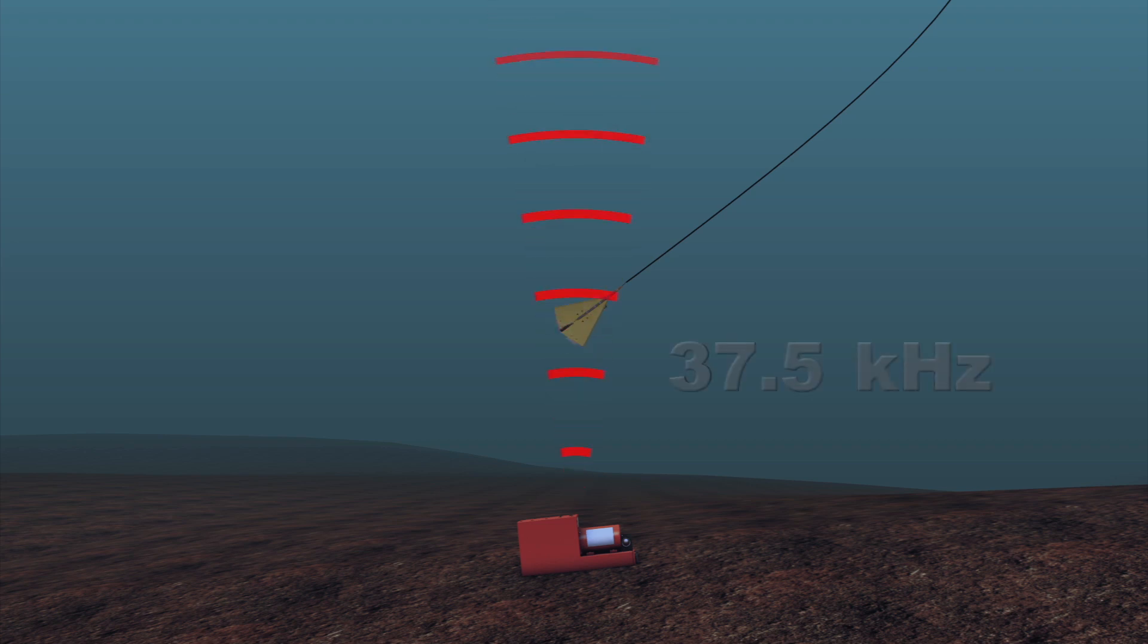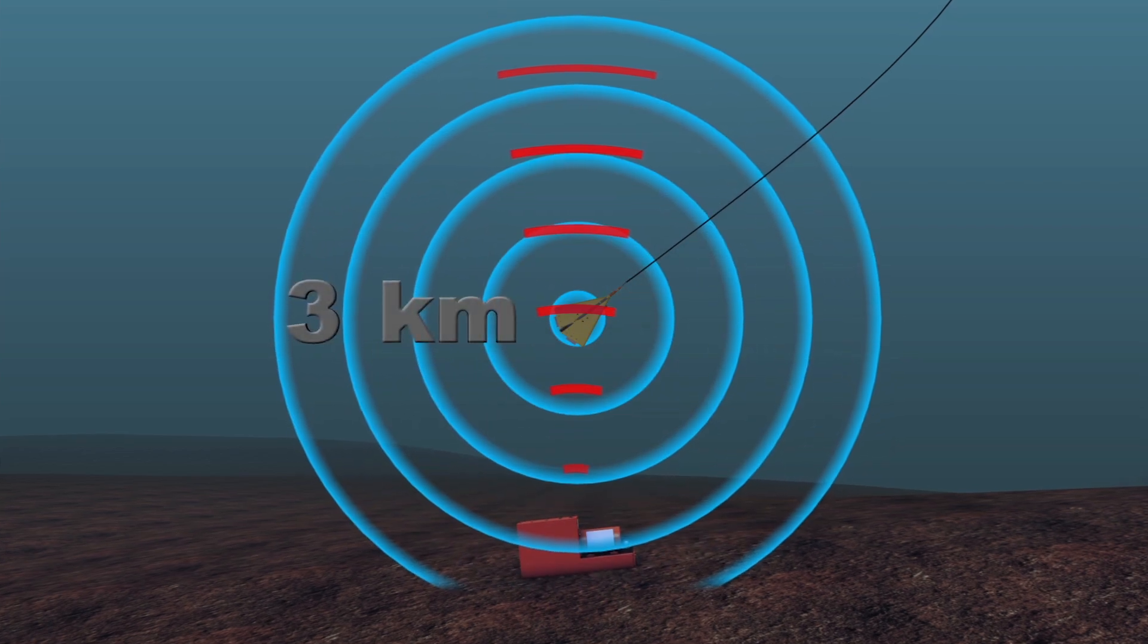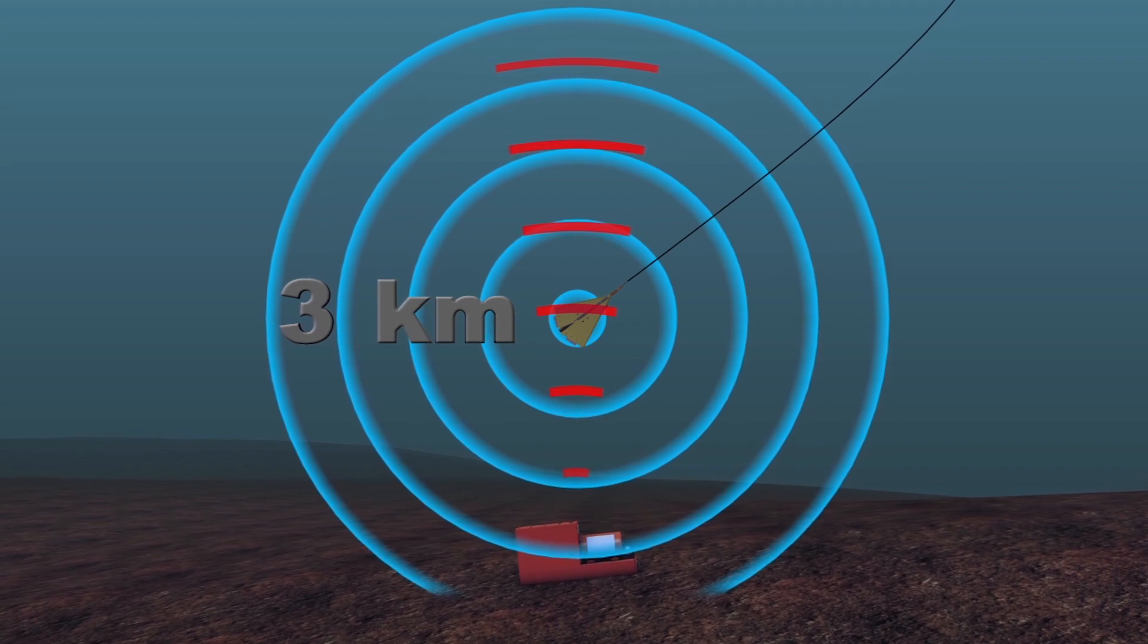The locator can detect a transponder signal between 3.5 and 50 kilohertz, which includes most commercial airliner data systems which transmit at 37.5 kilohertz. It has a three kilometer detection radius.